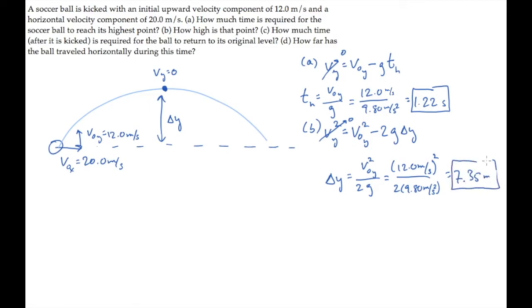Part C asks us after how much time the ball returns to its original level, that is, back to the ground. We'll call that time t_g, time to reach the ground, and find it using this kinematic equation. Delta y is v_0y t minus 1/2 g t squared. When the time t equals the time to reach the ground, delta y, the change in height equals zero. There's no change in height from when the ball was kicked on the ground to when it returns to the ground.